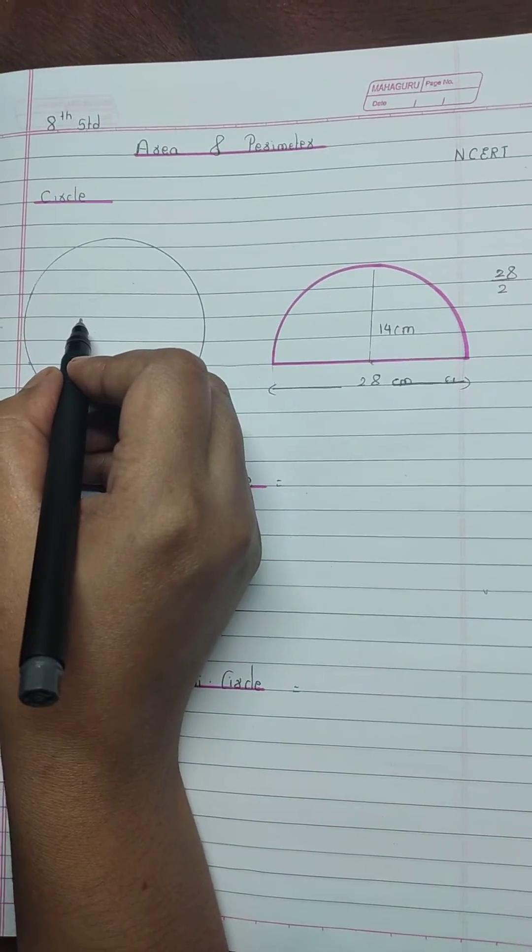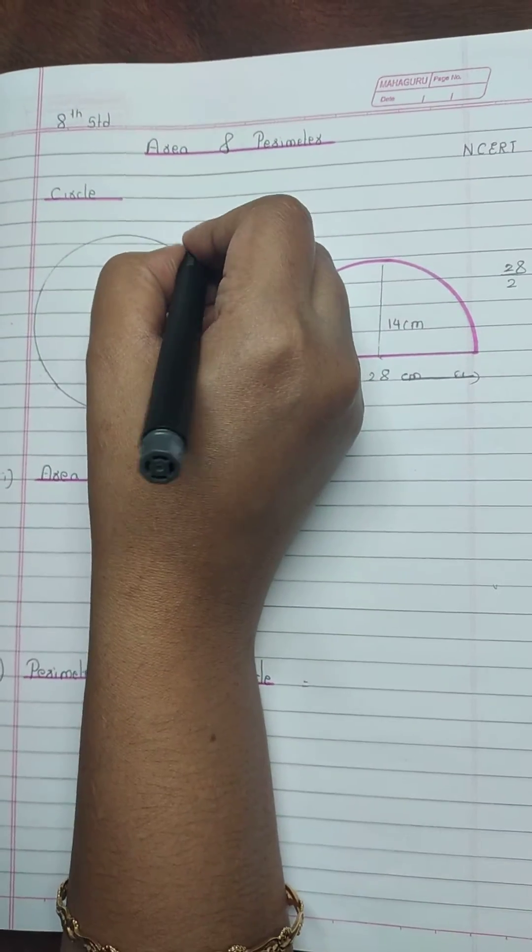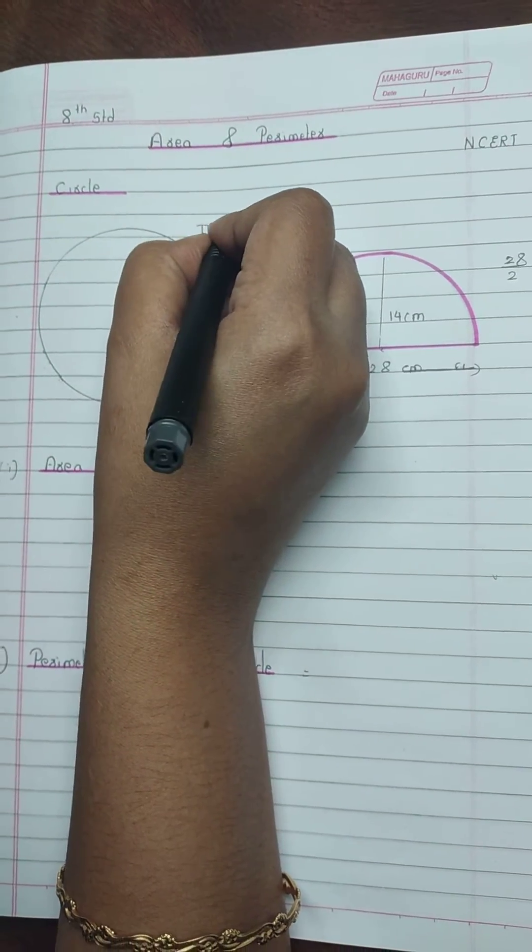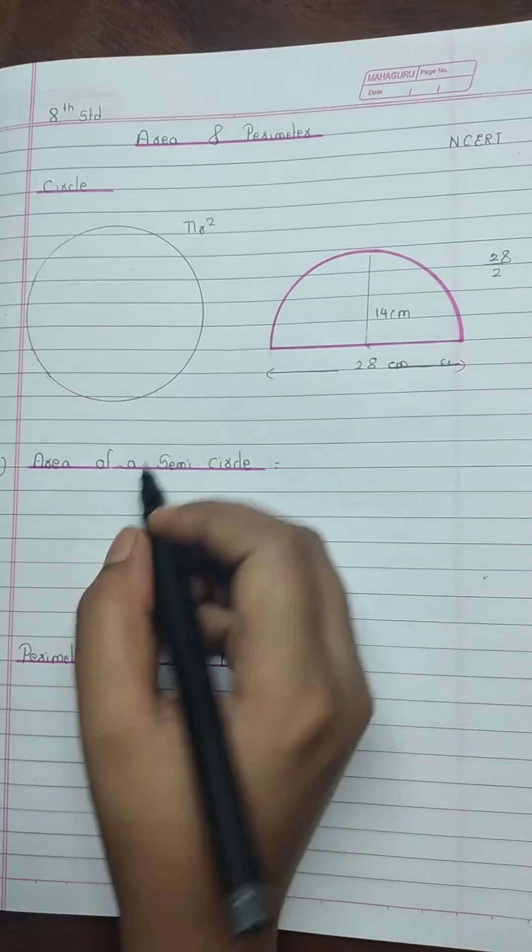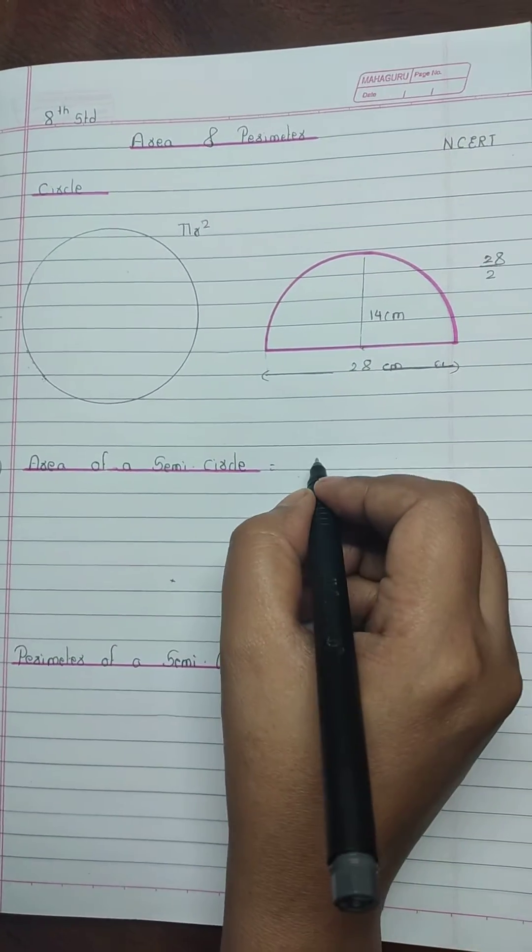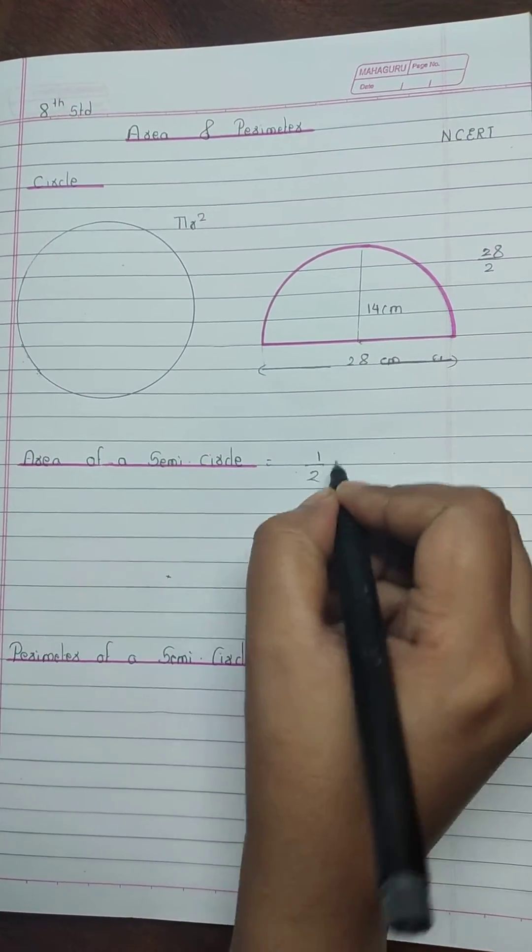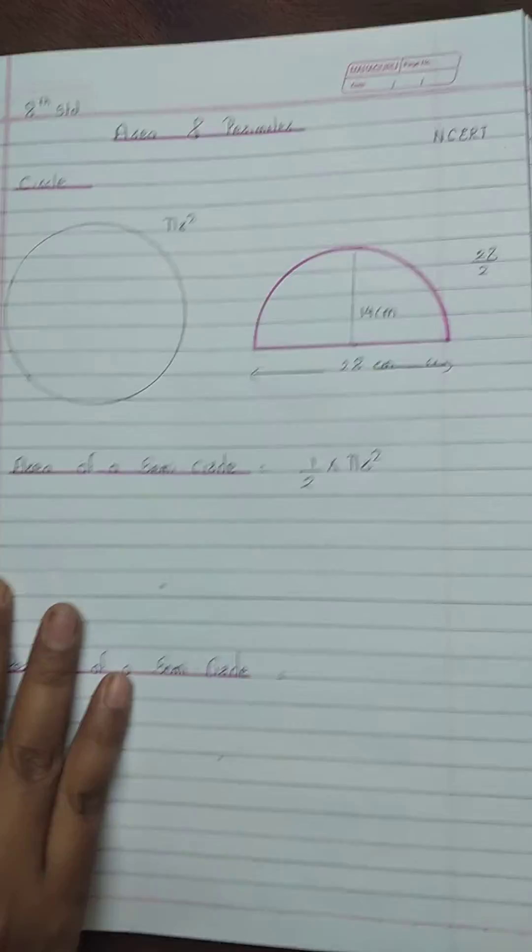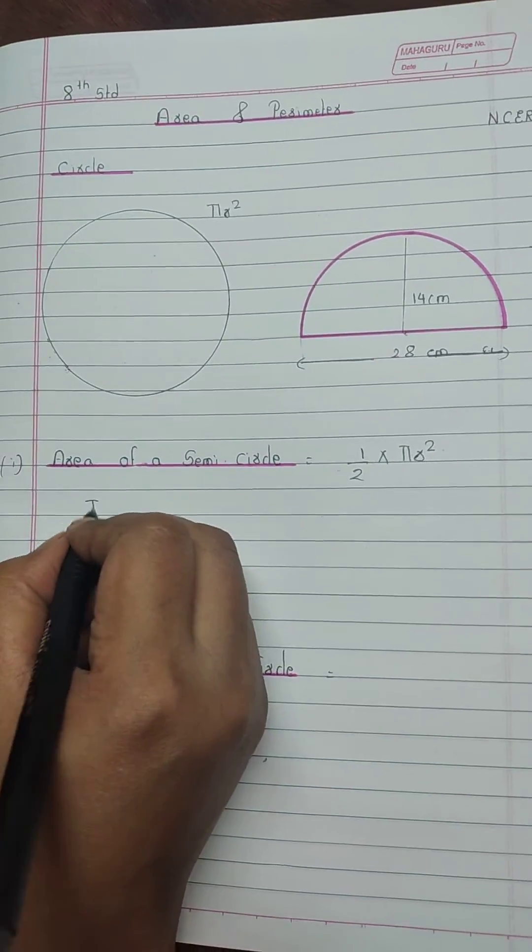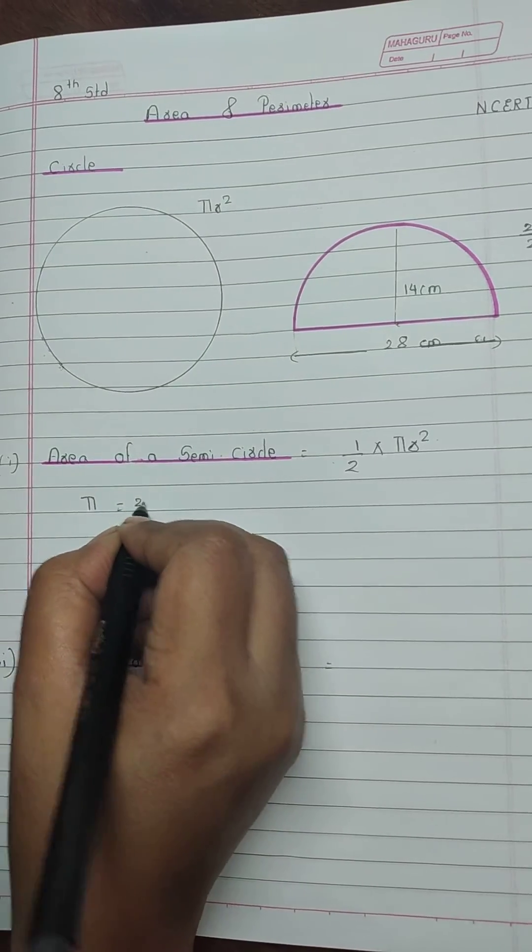Area of a circle is pi r squared. Semicircle is half of a circle, so area of a semicircle will be half times pi r squared. Take the value of pi as 22 upon 7.